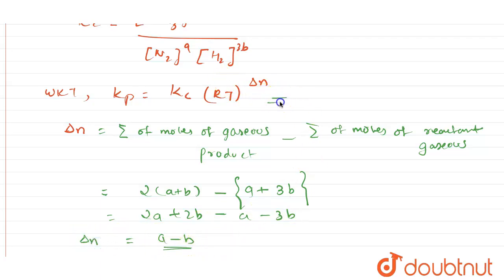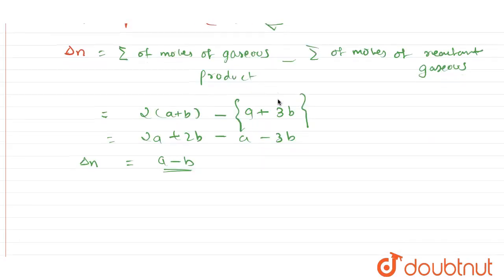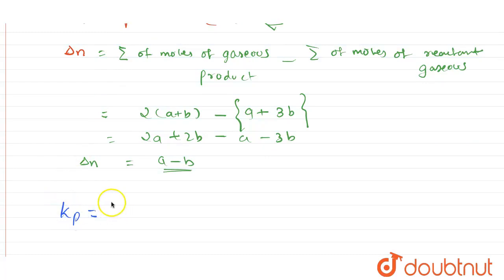We can put this in this formula, which will give me the value as Kp. The Kc value which we got, that is [NH3]^(2(A+B)), the whole divided by...